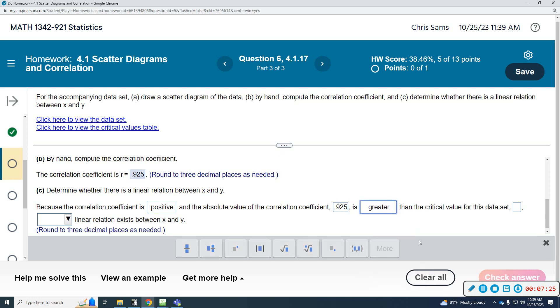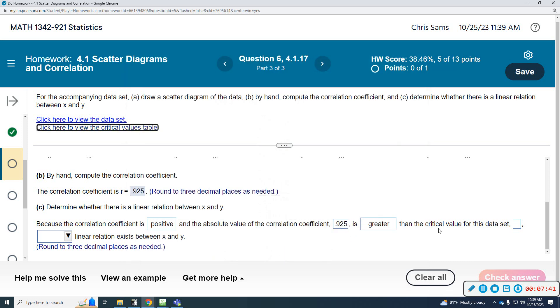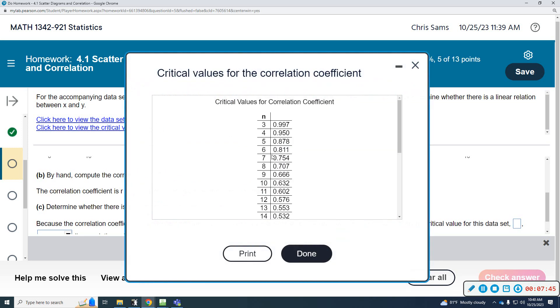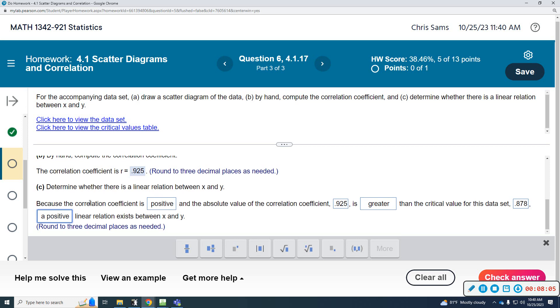And then because the correlation coefficient is positive, absolute value of the correlation coefficient is 0.925, which is greater than the critical value. Okay, so we need to look at the table. We had how many data points, 5. n was 5, which was 0.878, that's my critical value. So 0.925 is greater than the critical value of 0.878. So let me read this: because the correlation coefficient is positive, the absolute value of the correlation coefficient is 0.925, this is greater than the critical value for this data set, which is 0.878. A positive linear relationship exists, because it's greater than.